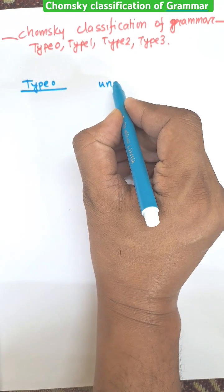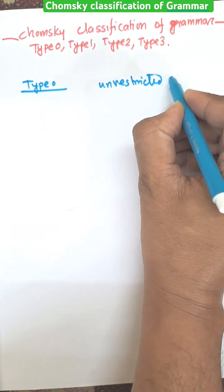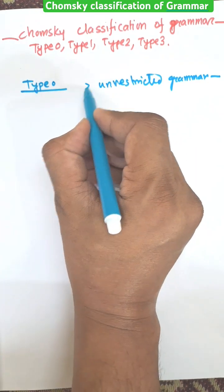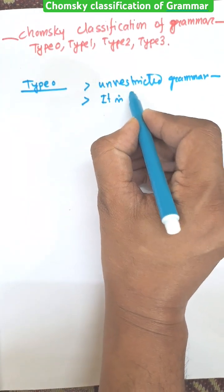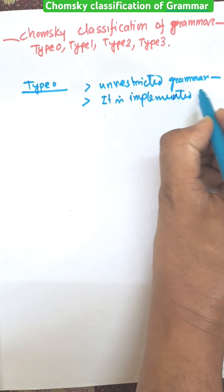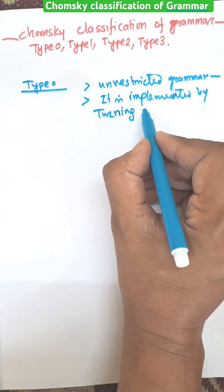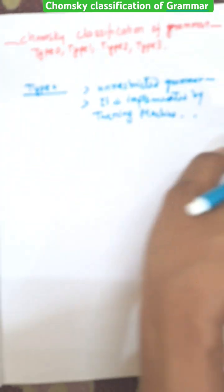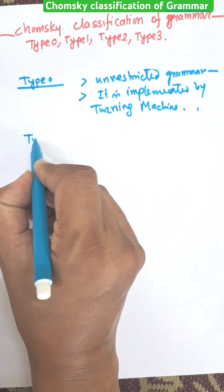Type 0 is an unrestricted grammar. It is implemented by a Turing machine. This kind of grammar has no restriction. So this one is Type 0 grammar.